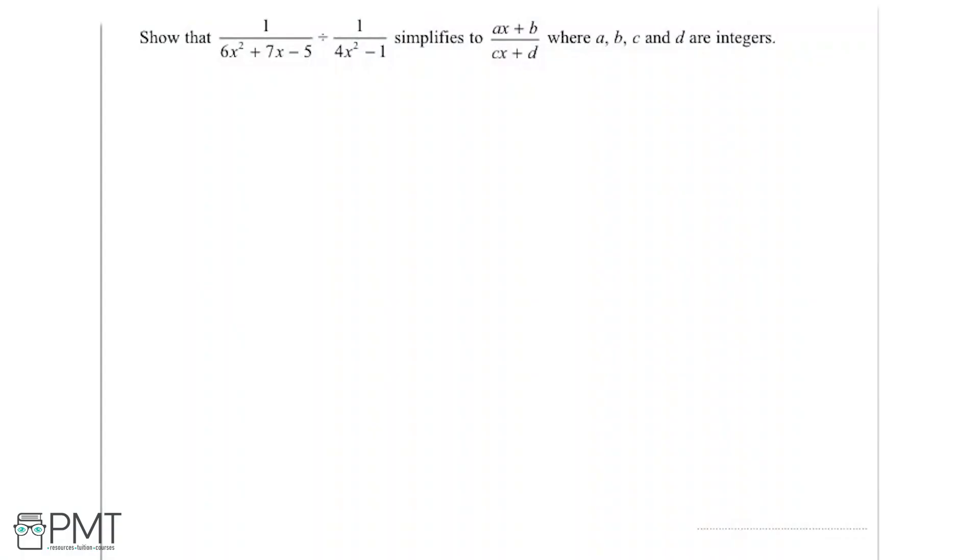Show that 1 over 6x squared plus 7x minus 5, divided by 1 over 4x squared minus 1, simplifies into the form ax plus b over cx plus d, where a, b, c and d are integers.